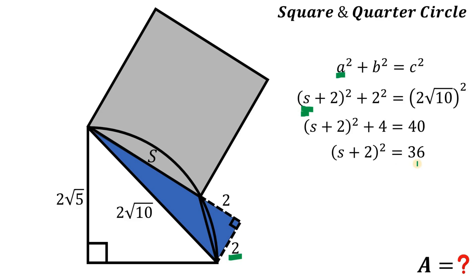So we get s + 2 equals just 6. Now subtract 2 on both sides. We get that s equals 4.